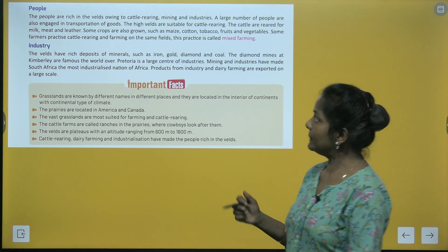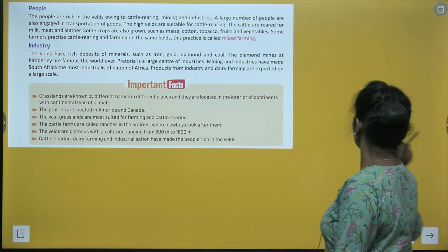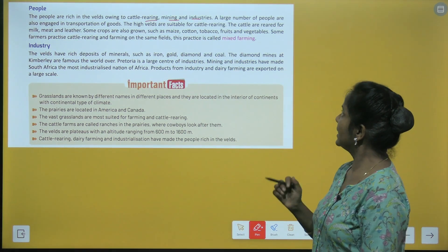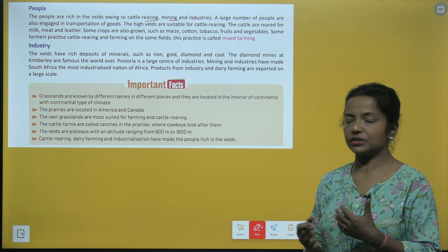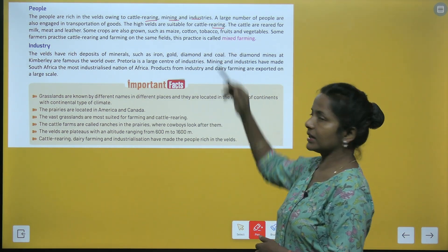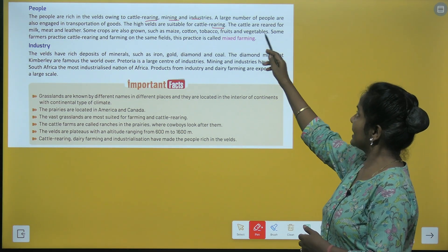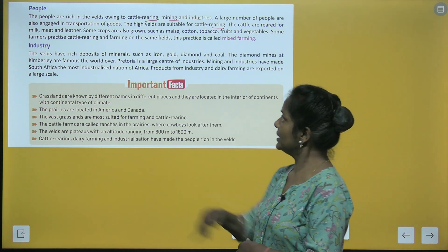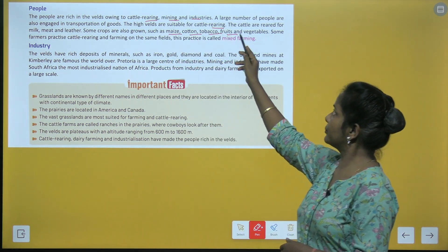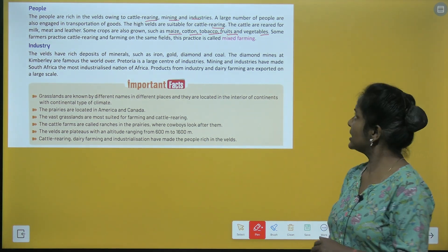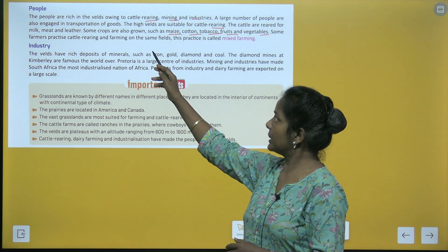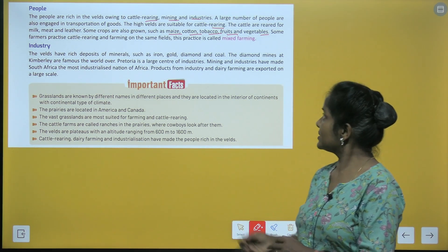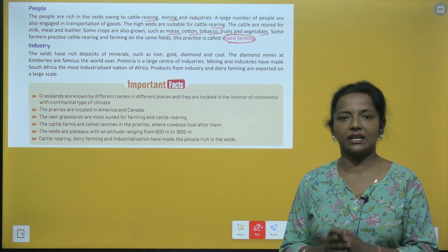People: the people are rich in the velds owing to cattle rearing, mining and industries. A large number of people are also engaged in transportation of goods. The high velds are suitable for cattle rearing — the cattle are reared for milk, meat and leather. Some crops are also grown such as maize, cotton, tobacco, fruits and vegetables. Some farmers practice cattle rearing and farming on the same field — this practice is called mixed farming.